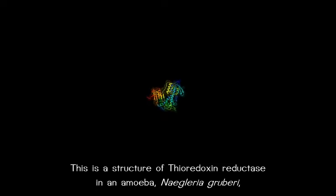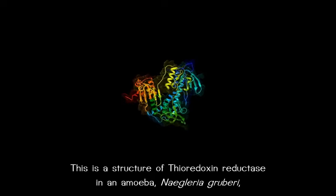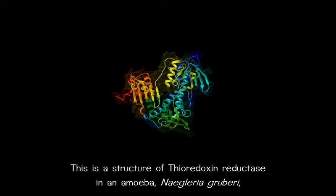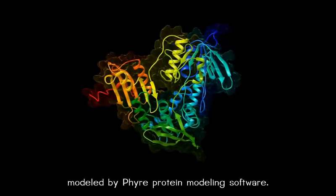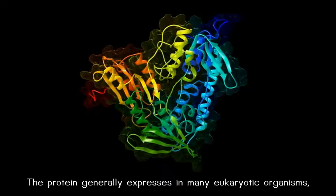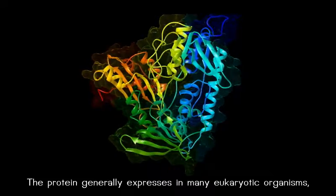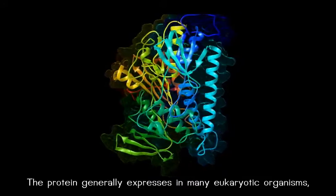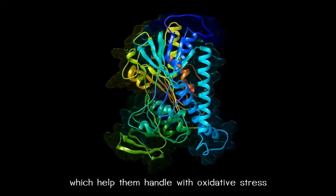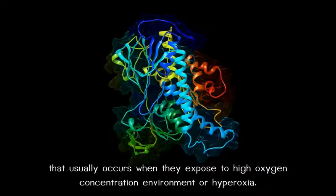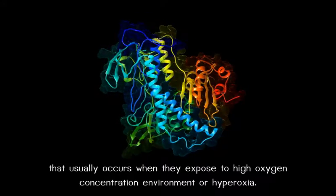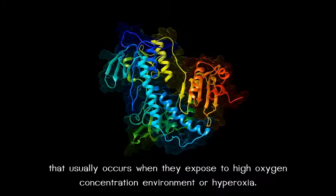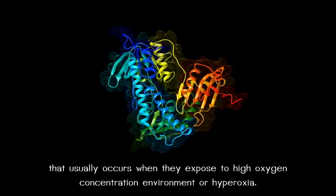This is a structure of thioredoxin reductase in an amoeba, Naegleria gruberi, modeled by phylic protein modeling software. The protein is generally expressed in many eukaryotic organisms, which help them handle oxidative stress that usually occurs when they are exposed to high oxygen concentration environments or hypoxia.